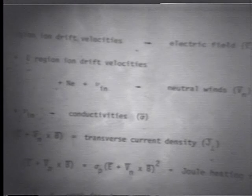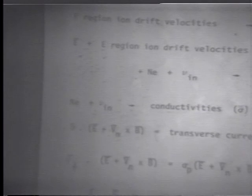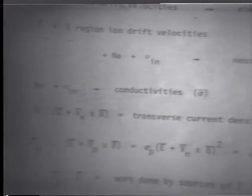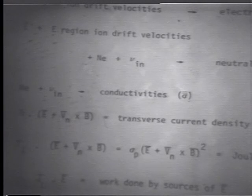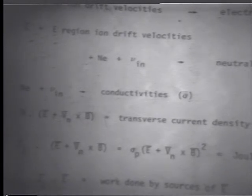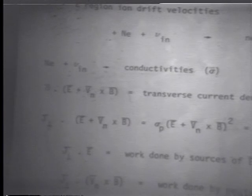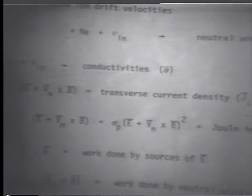Going down to the E-Region drift velocities, and coupling that with the electric field and the collision frequency, we can find out what neutral winds are required to explain the observed E-Region ion drifts. Taking the electron densities and the ion-neutral collision frequency with a model, we can calculate conductivities. We can also calculate currents using the electric field measured on the ground coupled with the neutral wind velocity cross B, and calculate the current density.